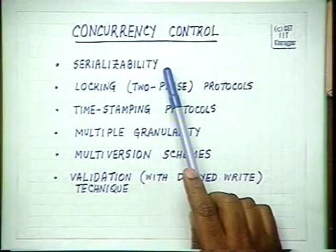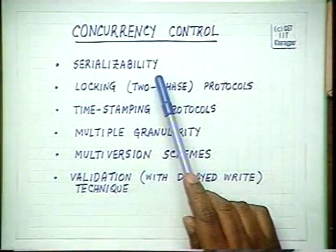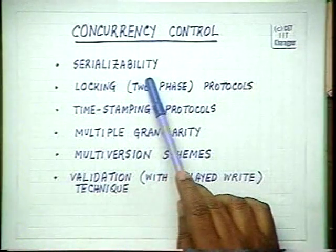Among these two objectives, the problem of consistency is foremost because that is dealing with correctness. The problem of enhanced concurrency is secondary, but it is a very important objective because it increases the throughput of the system. The whole issue of controlling consistency came up due to concurrency itself. One of the ways in which we can have both concurrency and consistency is the concept of serializability.